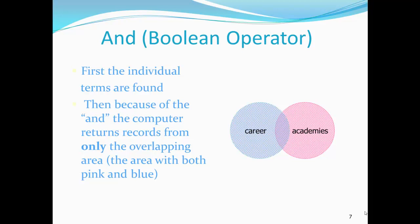The AND operator works in two operations and returns a smaller results list. First, all matches for the individual terms are returned. Then, because of the AND operator, the computer selects only records that have all search terms included. The visual shows circles that represent the two terms searched. Only the overlapping area represents the ANDed results.